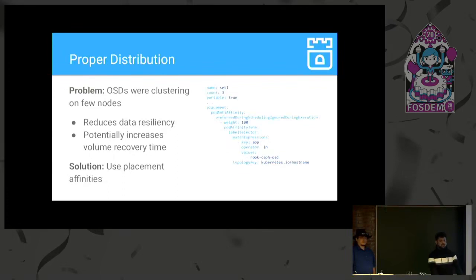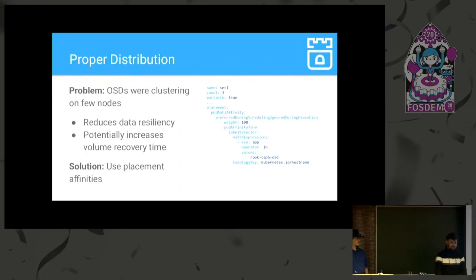The other issue we faced was proper distribution. With six OSDs across three nodes, all OSDs were coming up on the same node — which is really not desired. If you have three replicas and all are on the same node and that node goes down, you lose all your devices. To solve this, we use placement affinities.